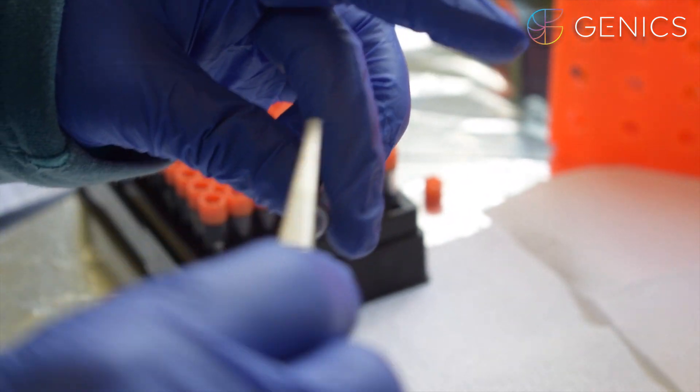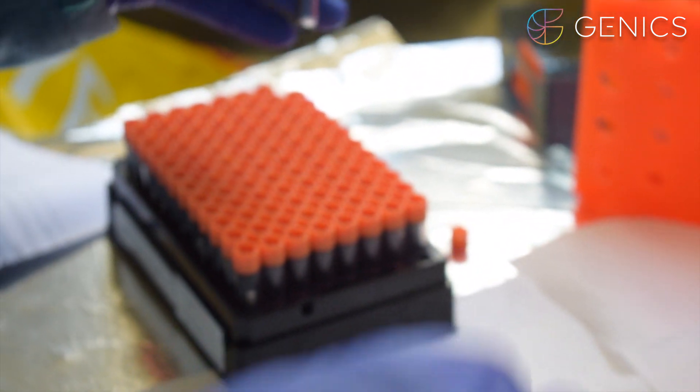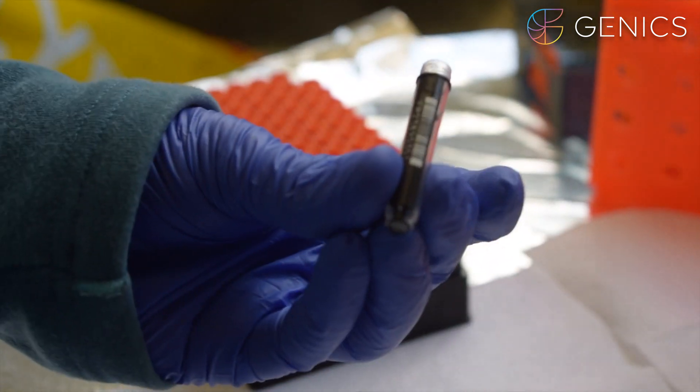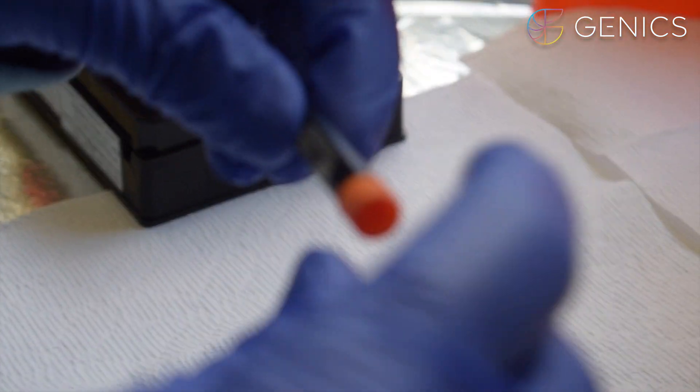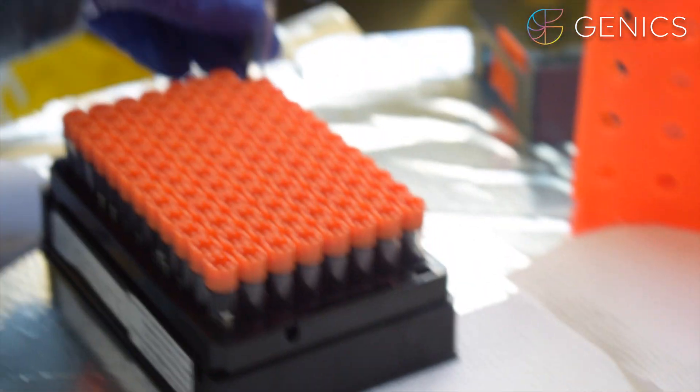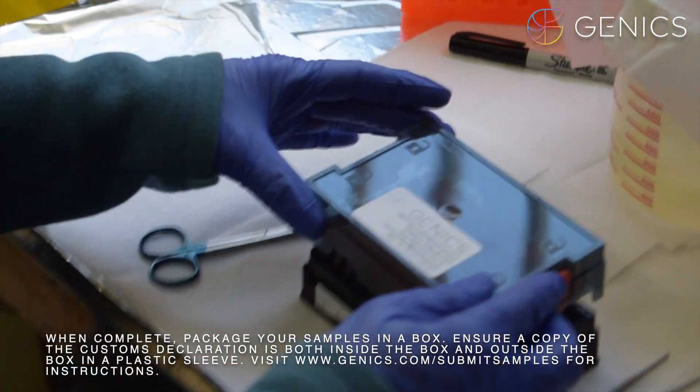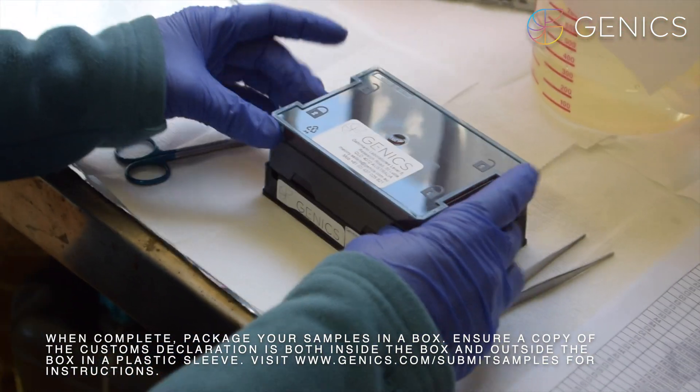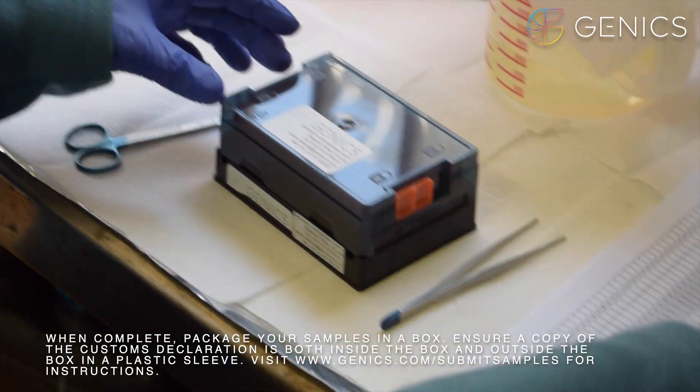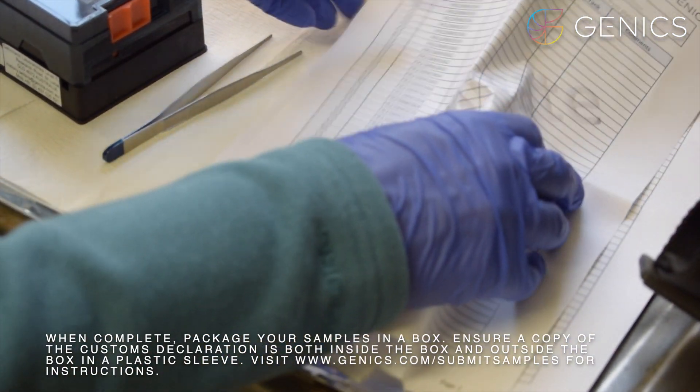So into our tube once we have our 15 heads we screw the orange lid back onto the tube and then return the lid to the box and click it into the locked position. You then pack this up with your data sheet ready to send to the Genix services laboratories.